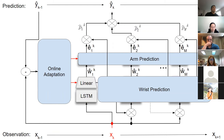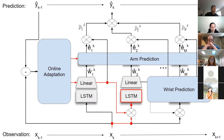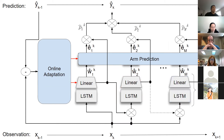There are three major components in the motion prediction framework: wrist prediction, arm prediction, and the online adaptation module. For the wrist prediction, the input is the observation of the previous n steps; it goes through an LSTM layer and the first-step wrist prediction is generated using a linear output layer. We then append the first-step wrist prediction to the input observation and feed the appended input to another LSTM layer, and after another linear layer we have the second-step wrist prediction. We do this iteratively until we have the full m-step wrist prediction.